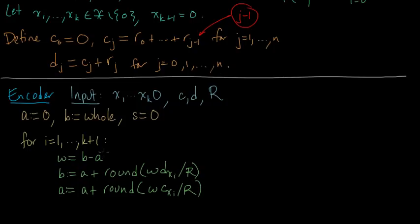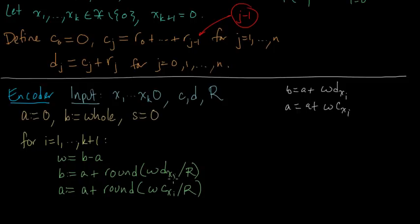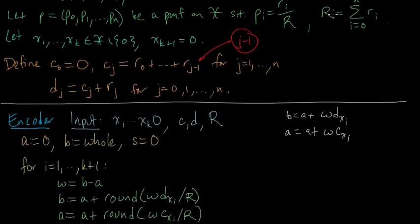Now, remember that in the infinite precision algorithm, at this step, B became A plus W * D[x_i] and A became A plus W * C[x_i]. But now, remember that D is the unnormalized version. The Ds and Cs are defined in terms of R, and we have to divide by this capital R — which is the sum of all the R's — in order to get the same thing as before, in order to get the probabilities. So that's what the division by R is doing.